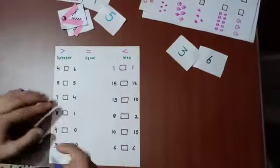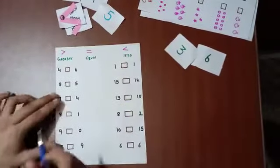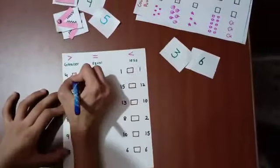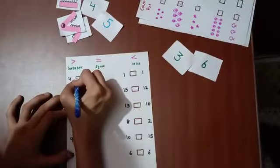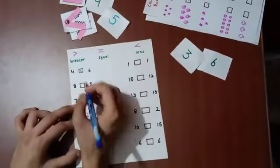We will continue to take the next worksheet. And we will have greater than and equal to symbols. So 4 and 6, which is greater? 4 or 6? 8 and 5.